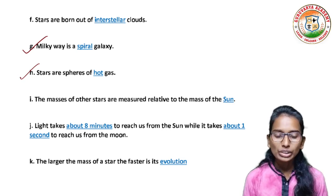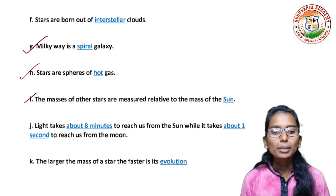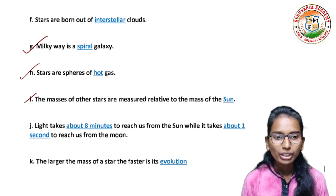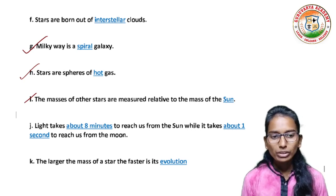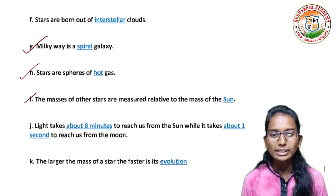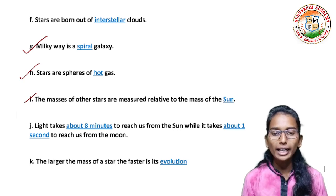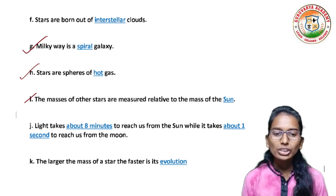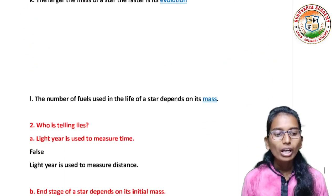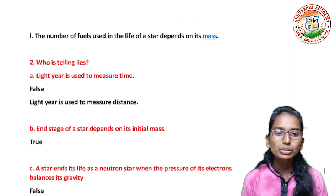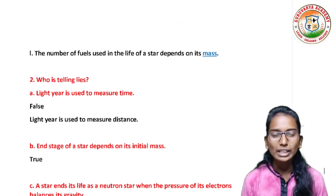Stars are pairs of hot gas. The mass of other stars are measured relative to the mass of the sun. Light takes about 8 minutes to reach us from the sun while it takes about 1 second to reach us from the moon. The larger the mass of the star, the faster its evolution. The number of fuels used in the life of a star depends upon its mass.